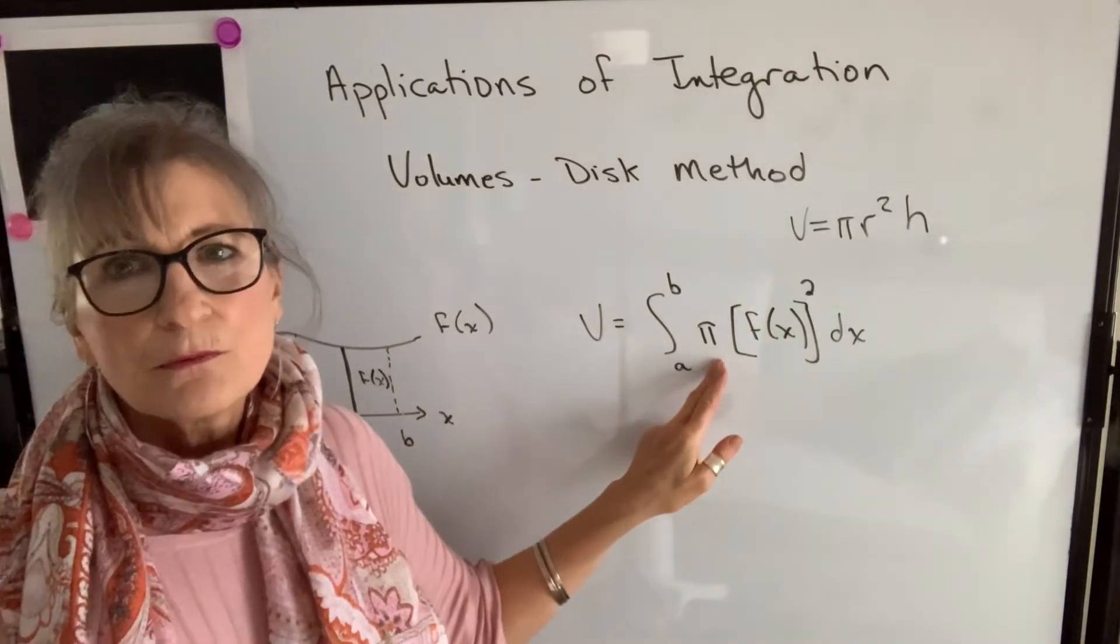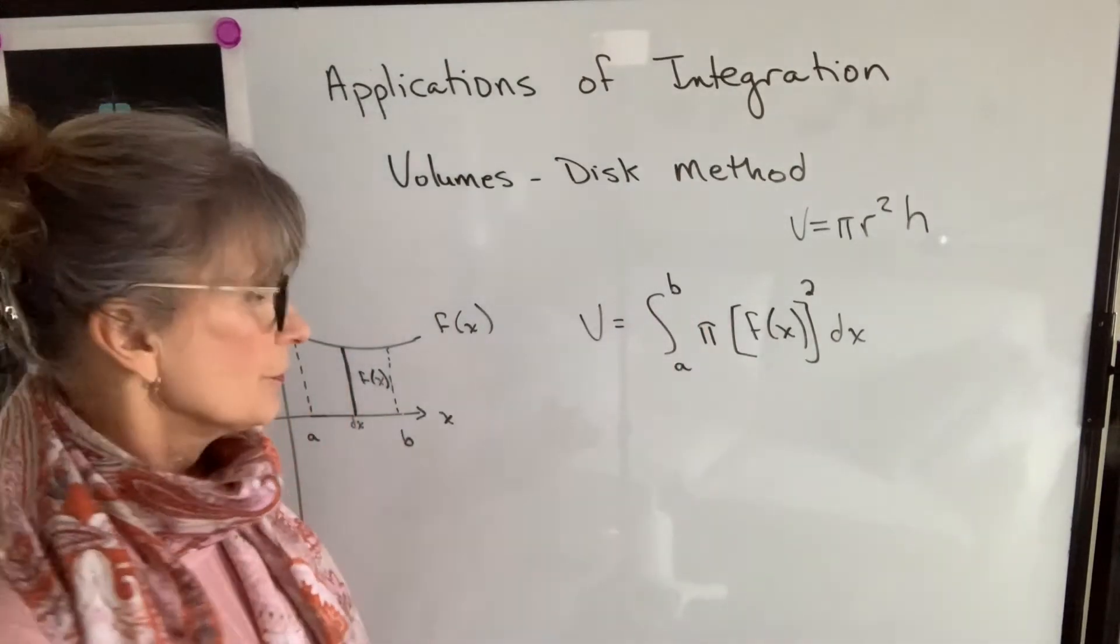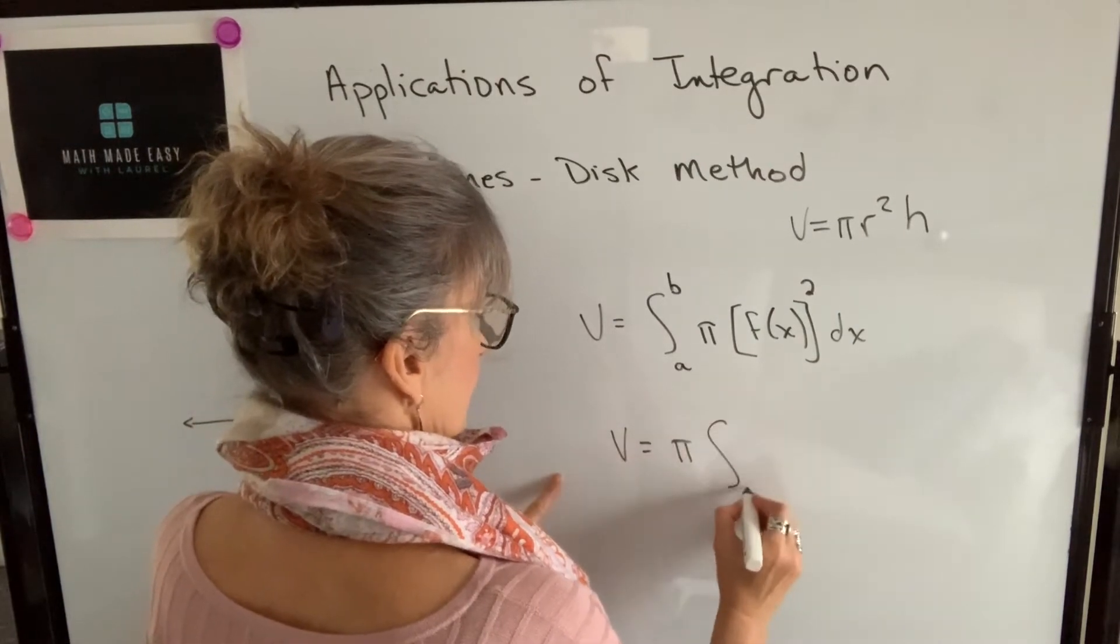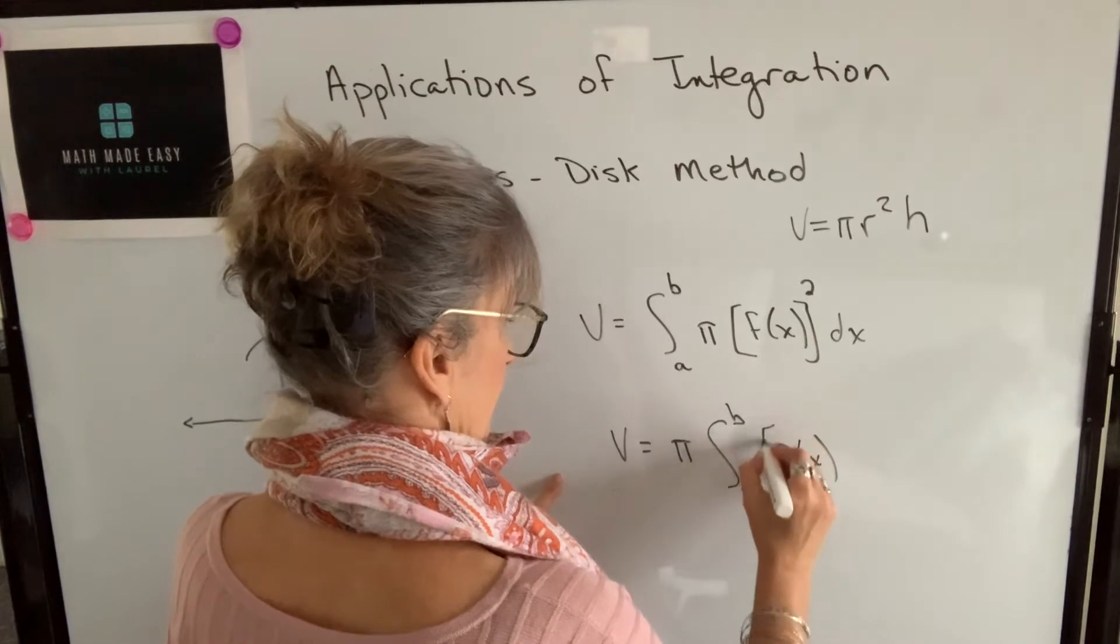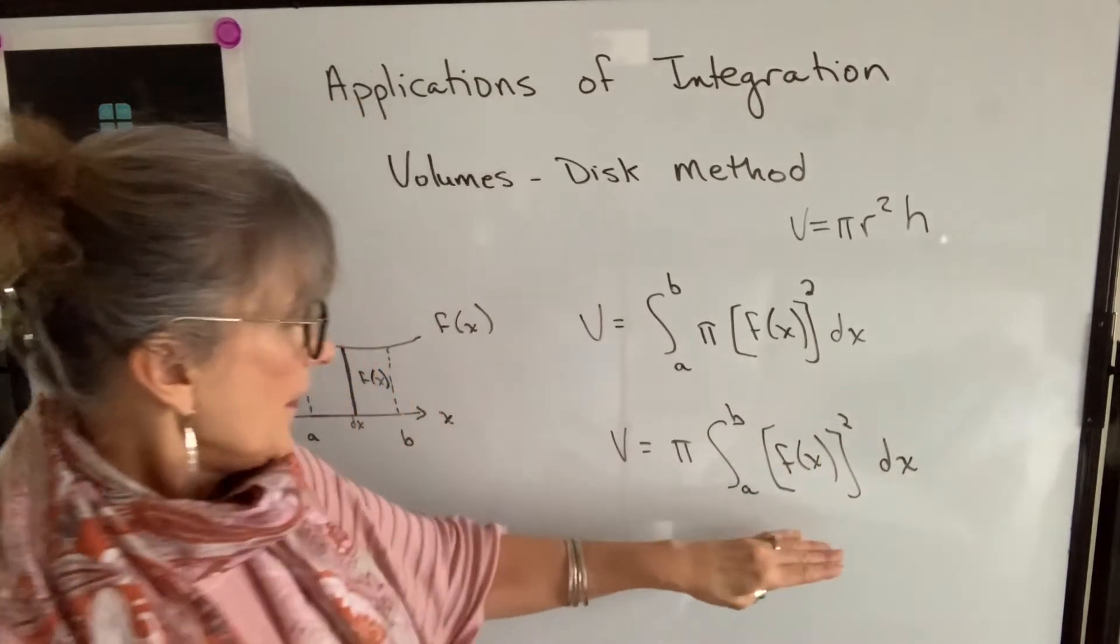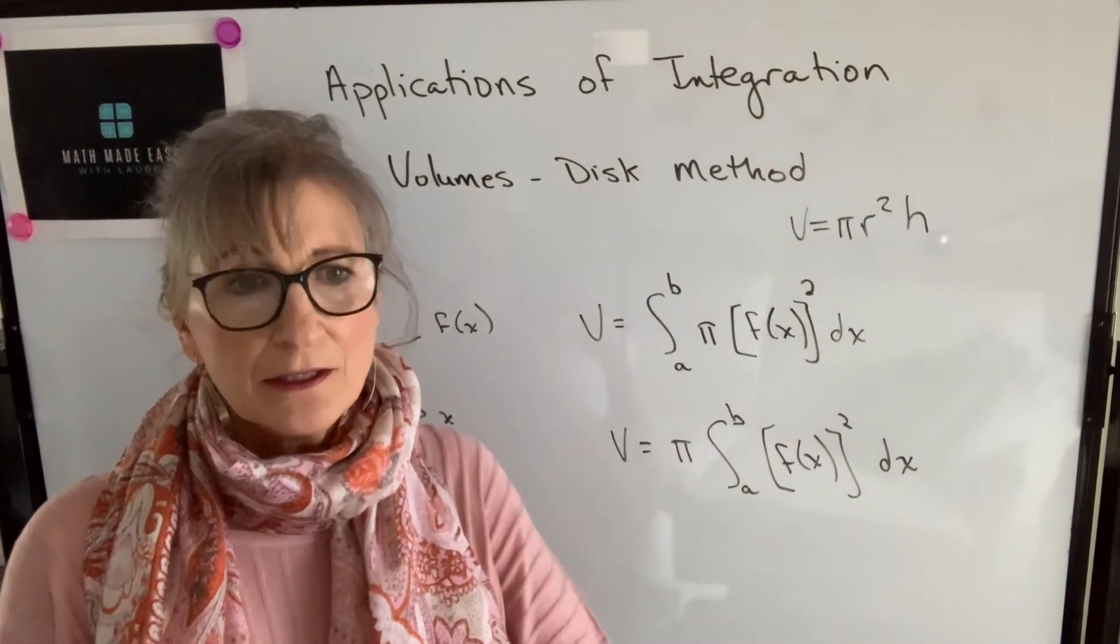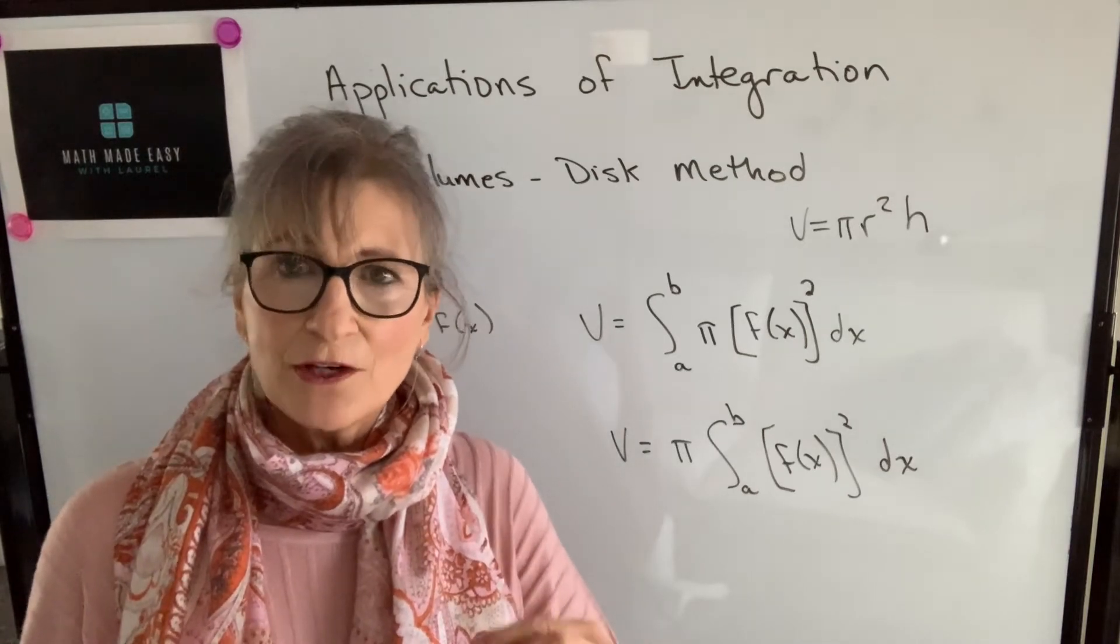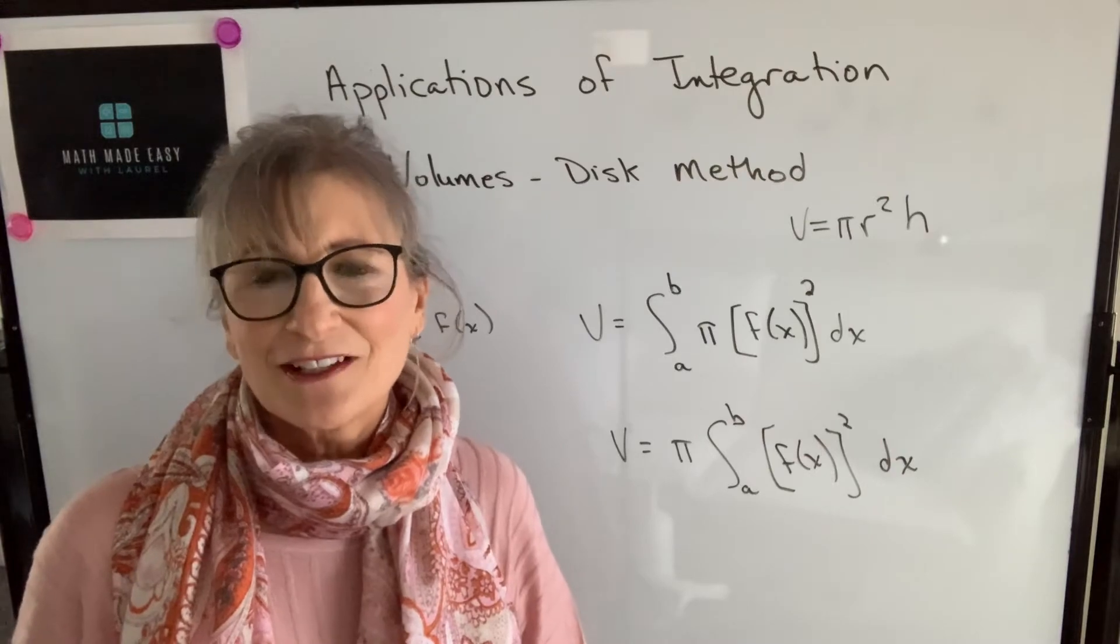Because pi is a constant, when you look up these formulas, usually you'll see that constant moved in front of the integral sign. So you'll probably see the formula written like this. And that's what we're going to use to find the volume of an area bounded by certain curves, including the x-axis, if that area is rotated around the x-axis.